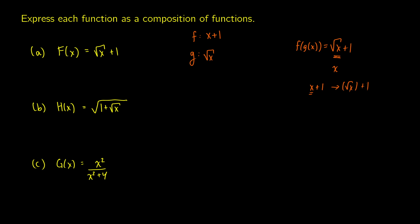For h of x equals the square root of 1 plus the square root of x, it's a similar idea. We make a simple function that is the square root of 1 plus x, then replace all instances of x with the square root of x. So f of x equals the square root of 1 plus x and g of x equals the square root of x. Then f of g of x gives us f of the square root of x, which is the square root of 1 plus the square root of x.